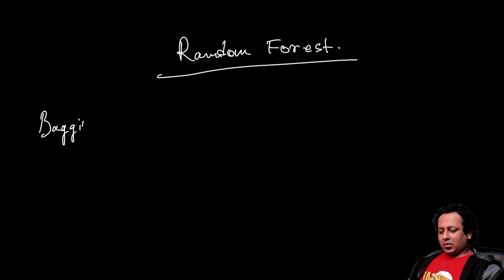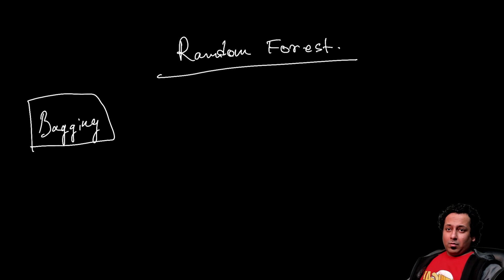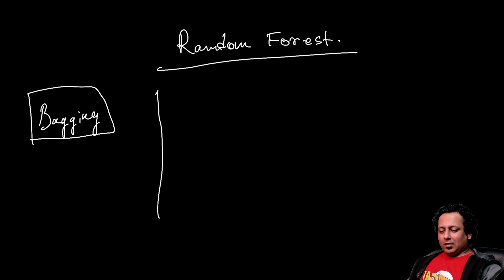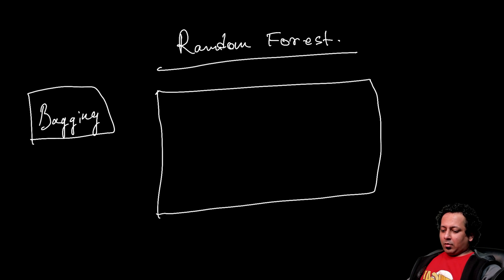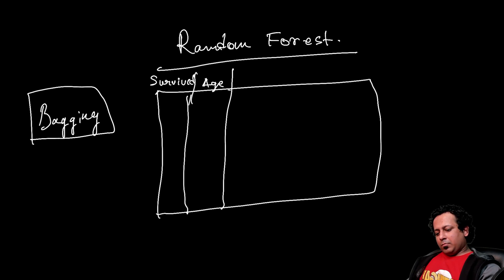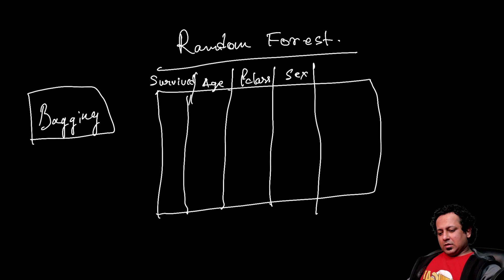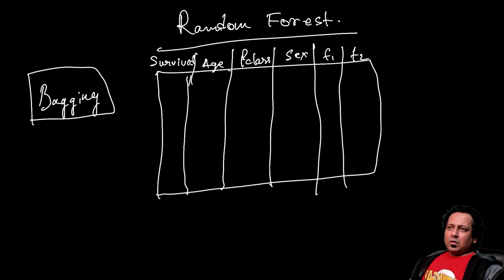Bagging is a technique in which you combine many different models. To illustrate, we'll use the Titanic dataset, which has a bunch of features and a target variable — survived — along with features like age, p-class, sex, and some other features F1, F2, and so on.